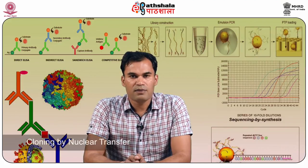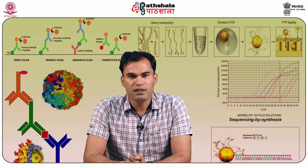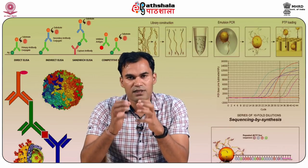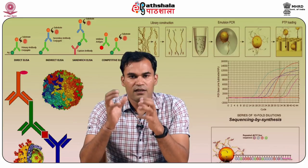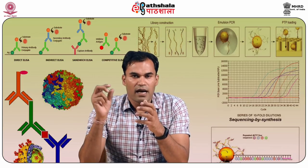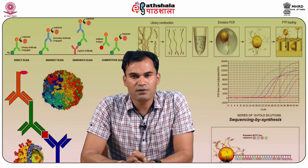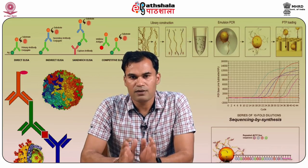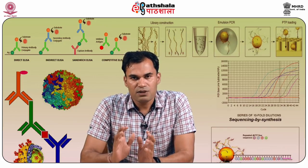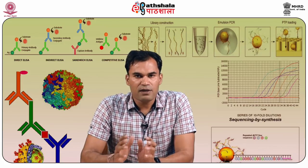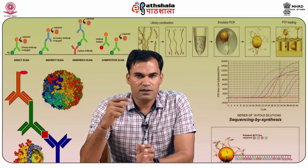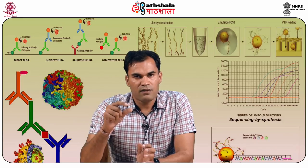Our next method is cloning by nuclear transfer, also known as somatic cell nuclear transfer (SCNT). Dolly was the first female created using this technique. In SCNT, we extract a nucleus from a somatic cell and insert it into an enucleated egg. After insertion, the somatic cell nucleus is reprogrammed by the host cell. The egg, now containing the somatic cell nucleus, is given a shock to induce division. After many mitotic divisions from a single cell, it forms a blastocyst that is implanted in a foster mother, leading to transgenic animal progeny.